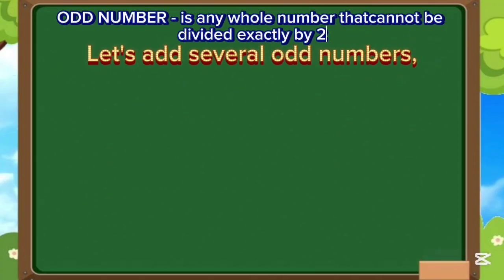Let's do a recap. An odd number is any whole number that cannot be divided exactly by 2.